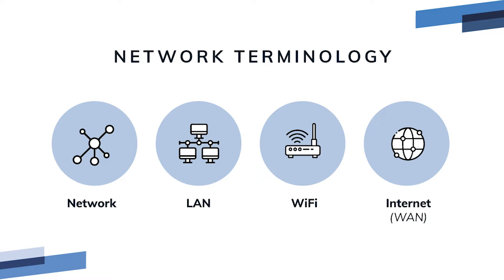Local area network, or LAN: the local network is your on-site network connecting all of your Rescue POS tablets and printers together. Your restaurant's local area network is the backbone of your POS system. The LAN is managed by your router, and devices on the local network connect to the router using LAN cables or Wi-Fi. The internet is your WAN, or wide area network, connecting you to computers that are not local.